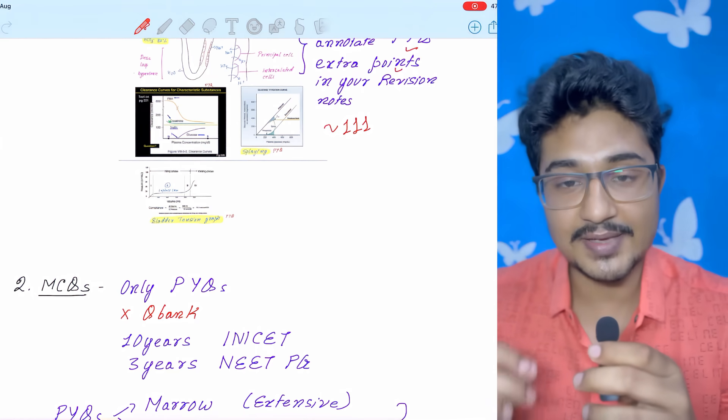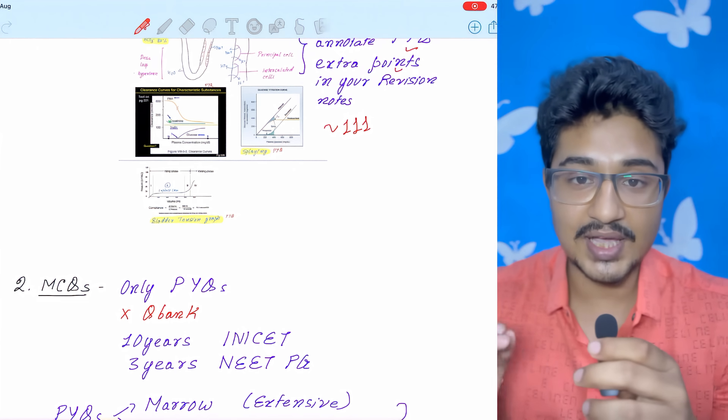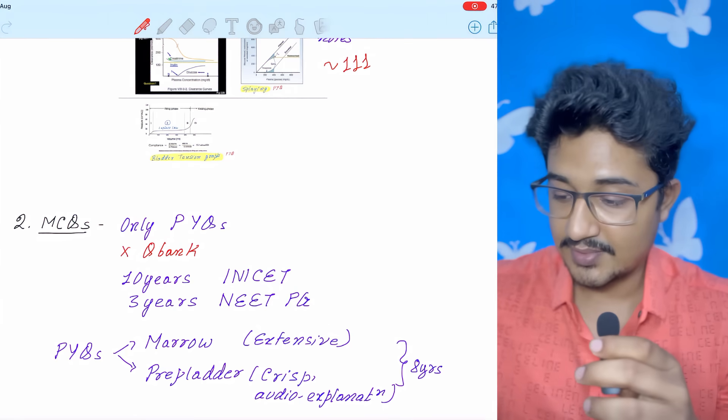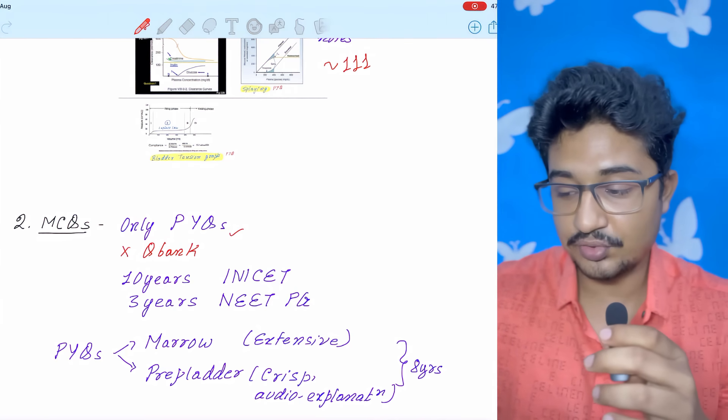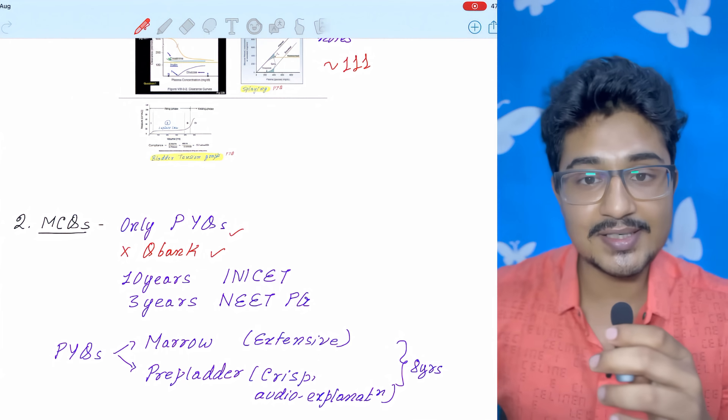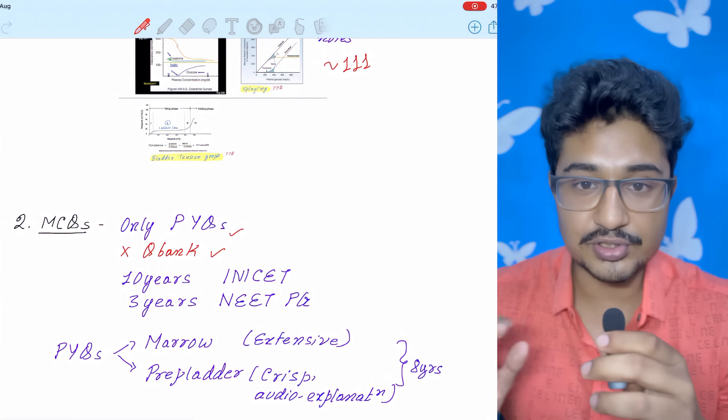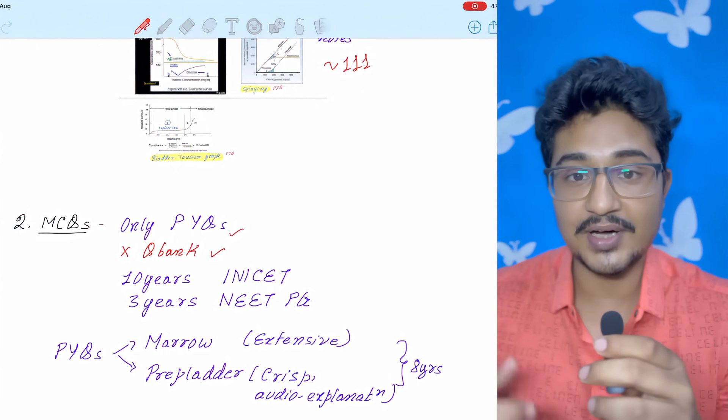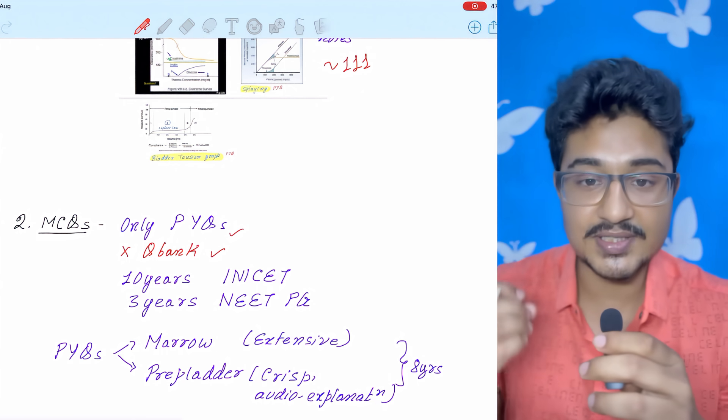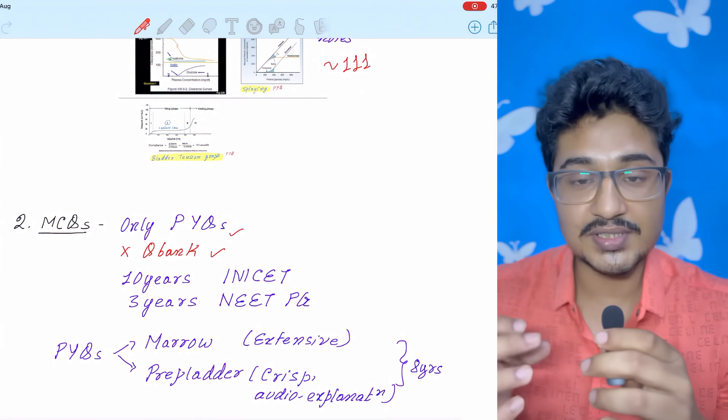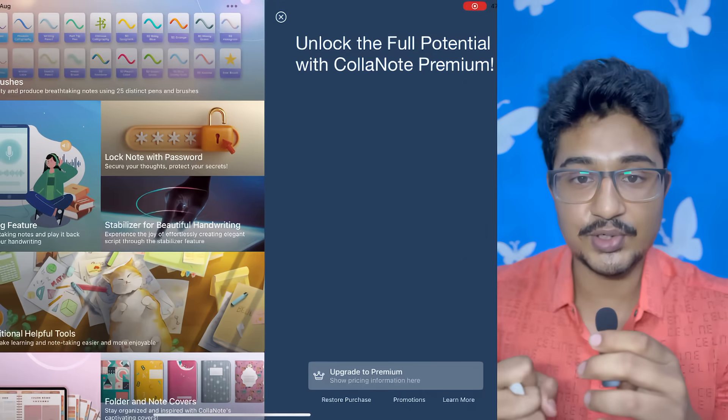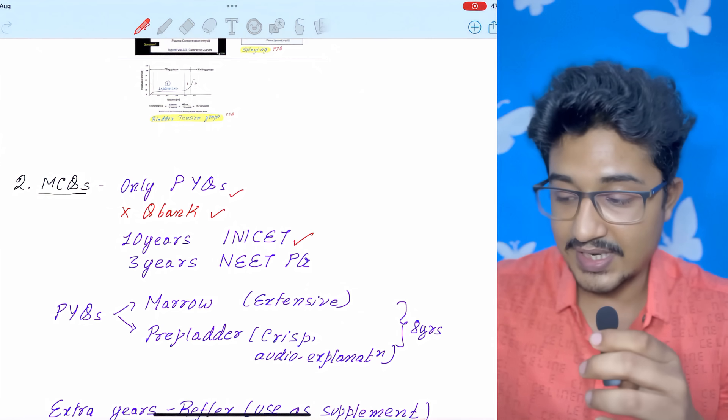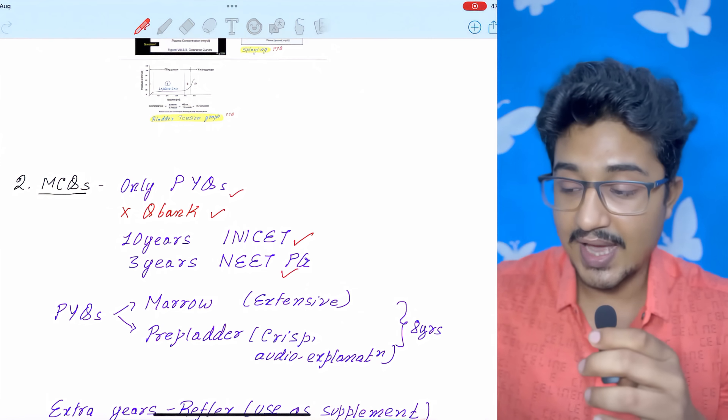Second thing is MCQ. Since this is an MCQ based exam, you should practice as many MCQs as possible. At least 50 to 100 MCQs daily, you should make it a habit. Now, many of you will ask me that whether to solve PYQ modules only or whether to go for QBank. Since the time is limited, I will advise you not to go for QBank because QBanks are made by the PGTs only and many extra points which are important for the post-graduation perspective are also given in the QBank. So most high yield are the previous year question modules because the previous year questions are the topics from which INICT focuses majority of the questions. Approximately 60% questions come from the previous year topics of NEET PG and INICT. So you should focus mainly on the INICT previous year topics that is 10 years of INICT and 3 years of NEET PG.